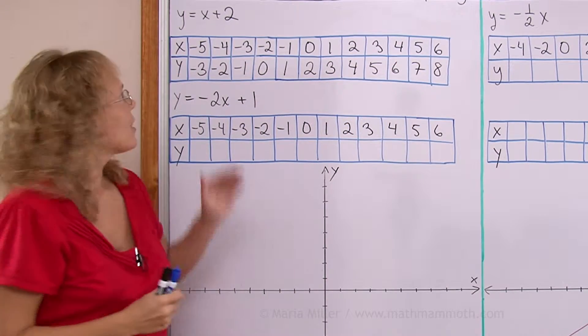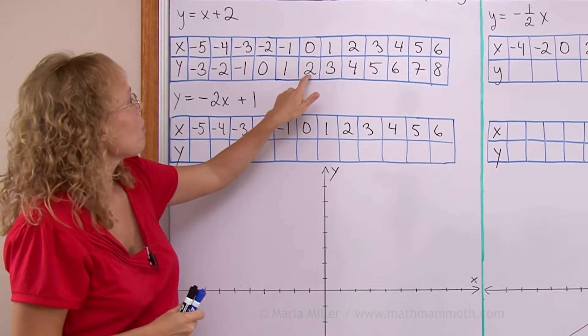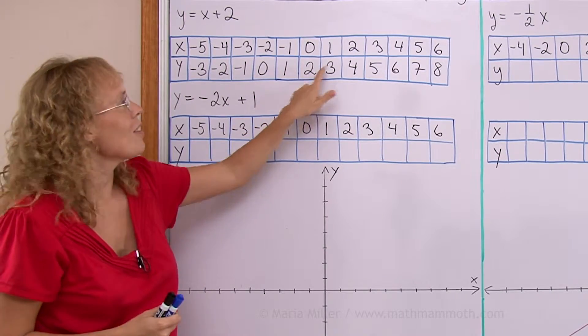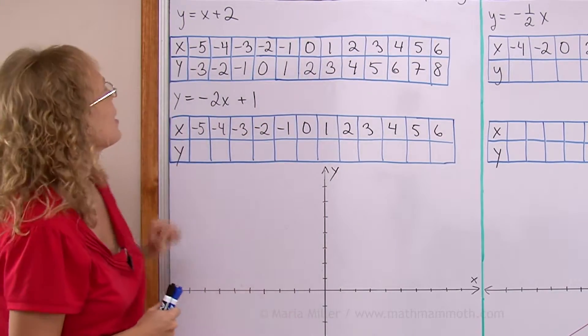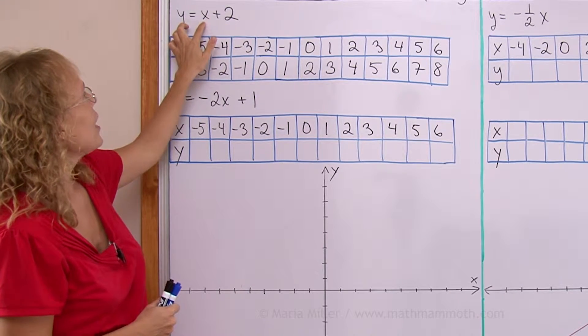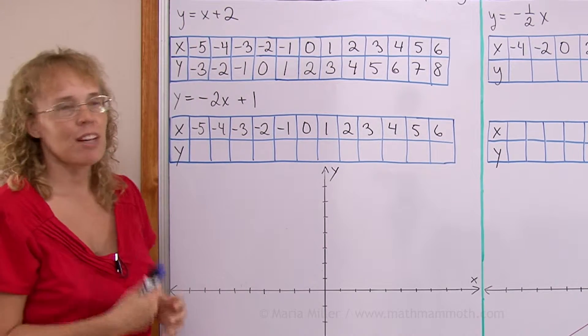Even in the table, you can see this general rule that the y values are always 2 more than the x values, just like the equation says.